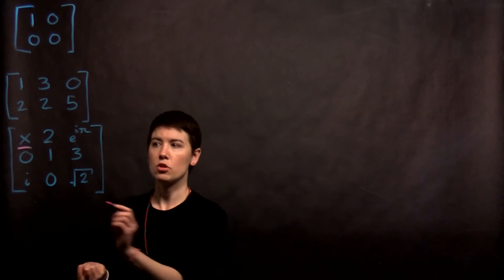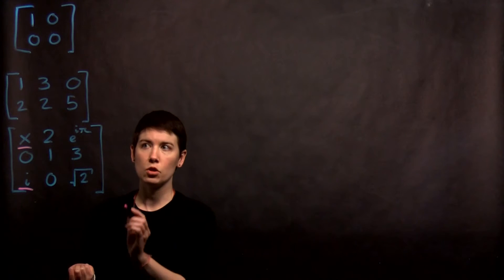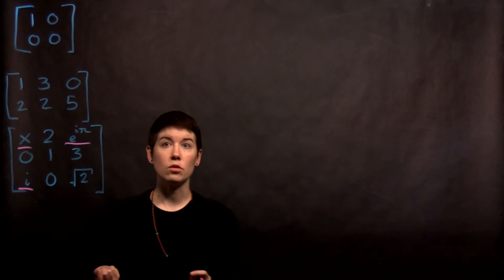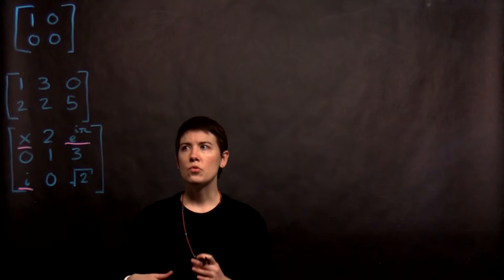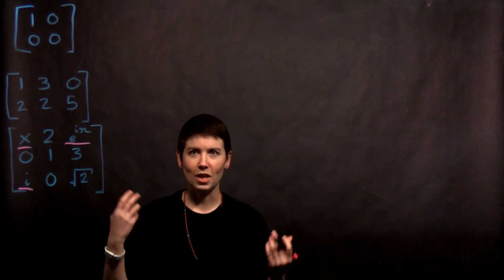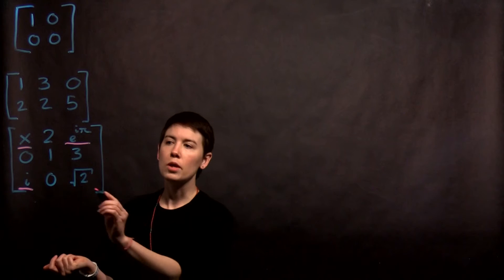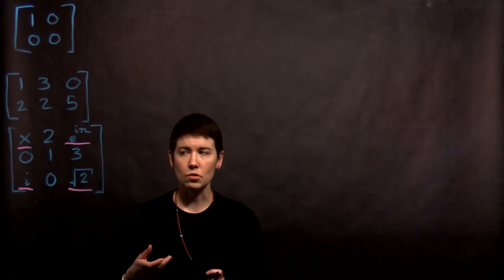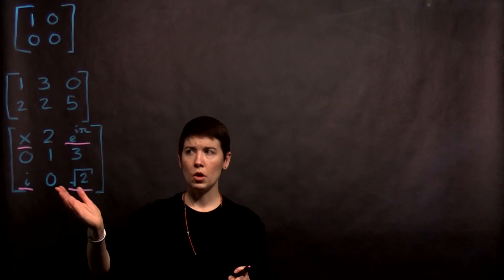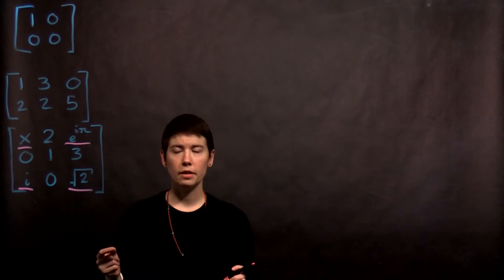We're going to have complex matrices, which means that you have imaginary numbers, and we're going to have values like e to the i pi. So hard, complicated things can appear in matrices, and we can also have values like this, irrational numbers. So be ready for our matrices to be more complicated.